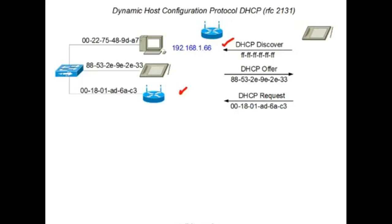The reason it's done that way is because there could be multiple offers, and so the tablet resolves which offer it wants to respond to with a DHCP request. When the DHCP offer message is sent, that IP address is taken from a pool at the DHCP server and is reserved. If there's no response or no DHCP request received, then that address is no longer reserved and is available for assignment. The router then responds by sending a DHCP acknowledgement back to the tablet.